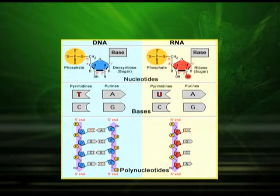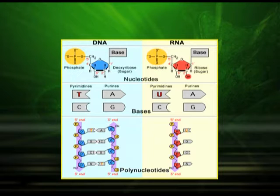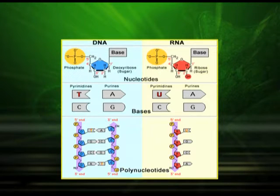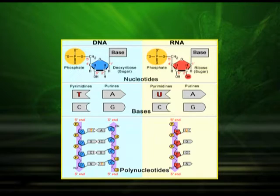In DNA, the sugar is deoxyribose sugar. On the other hand, in RNA, the sugar is ribose. Another very important difference: in DNA, the pyrimidines are cytosine and thymine, while in RNA, the pyrimidines are uracil and cytosine. So uracil replaces thymine in RNA. Another important difference is that DNA is double stranded, while RNA is single stranded.